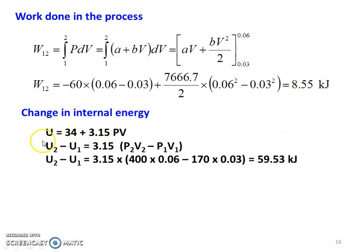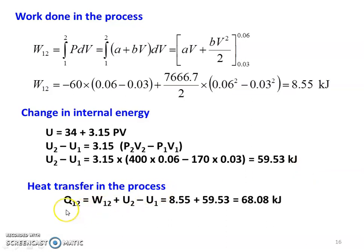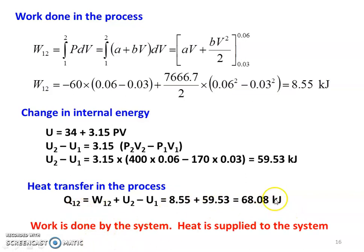The change in internal energy: U equal to 34 plus 3.15 PV, so U2 minus U1 equal to 3.15 into (P2V2 minus P1V1). Substituting numerical values: U2 minus U1 equal to 3.15 into (400 into 0.06 minus 170 into 0.03) equal to 59.53 kilojoules. Heat transfer during the process: Q12 equal to W12 plus (U2 minus U1) equal to 8.55 plus 59.53 equal to 68.08 kilojoules. Heat transfer is positive — heat is applied to the system (68.08 kJ) and work is done by the system (8.55 kJ).